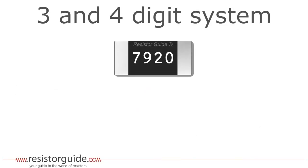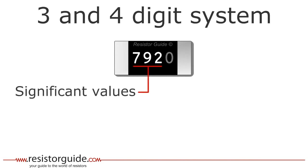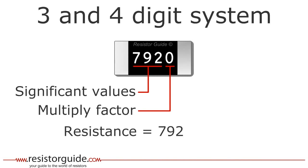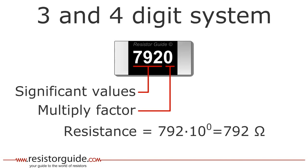Now we consider a four digit code. Here the first three digits represent the significant values of the resistance. This code is used for more accurate resistors. The fourth digit is the multiply factor. For this example the resistance is 792 times 10 to the power of 0, which results in 792 ohms.